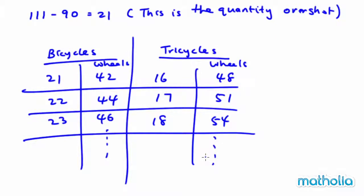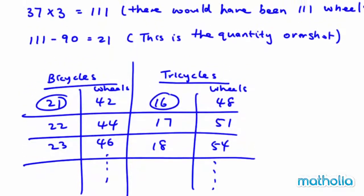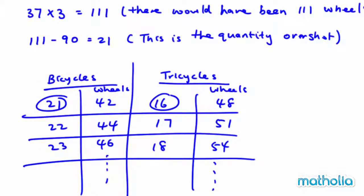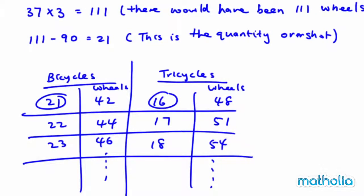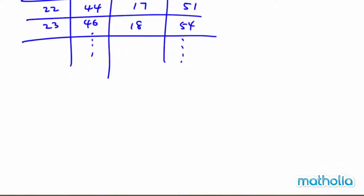The total number of bicycles and tricycles must add up to 37. It happens that the first table entry showing 21 plus 16 gives me 37. So I found the exact number of bicycles and tricycles.